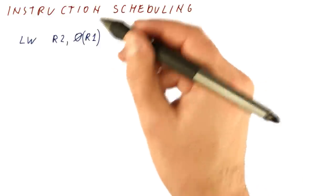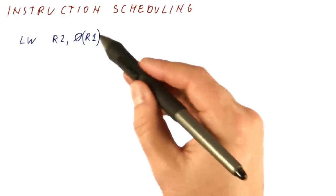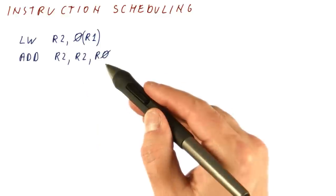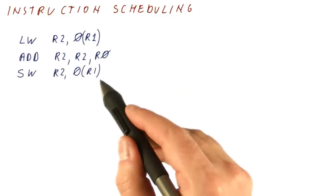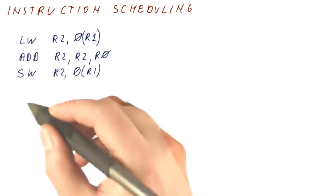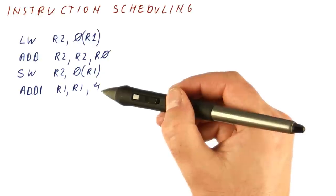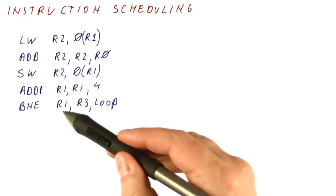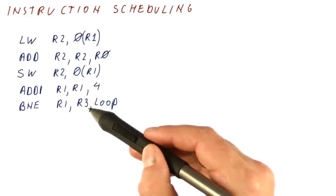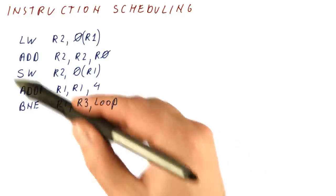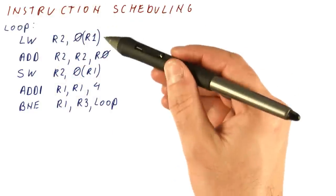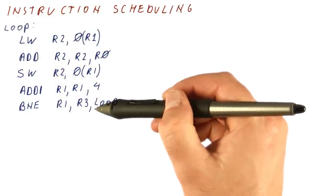Here's a sequence of instructions that can happen. We load a value from the address in R1 into R2. We add R0 to that. We store the result back into that memory location. We next move the memory address four places forward so that we are looking at the next, for example, element in an array in memory. And then we compare the pointer to some sort of end of array pointer. And if they're not equal, we jump back to the loop. So these are five instructions out of which a single iteration of a loop is composed of.